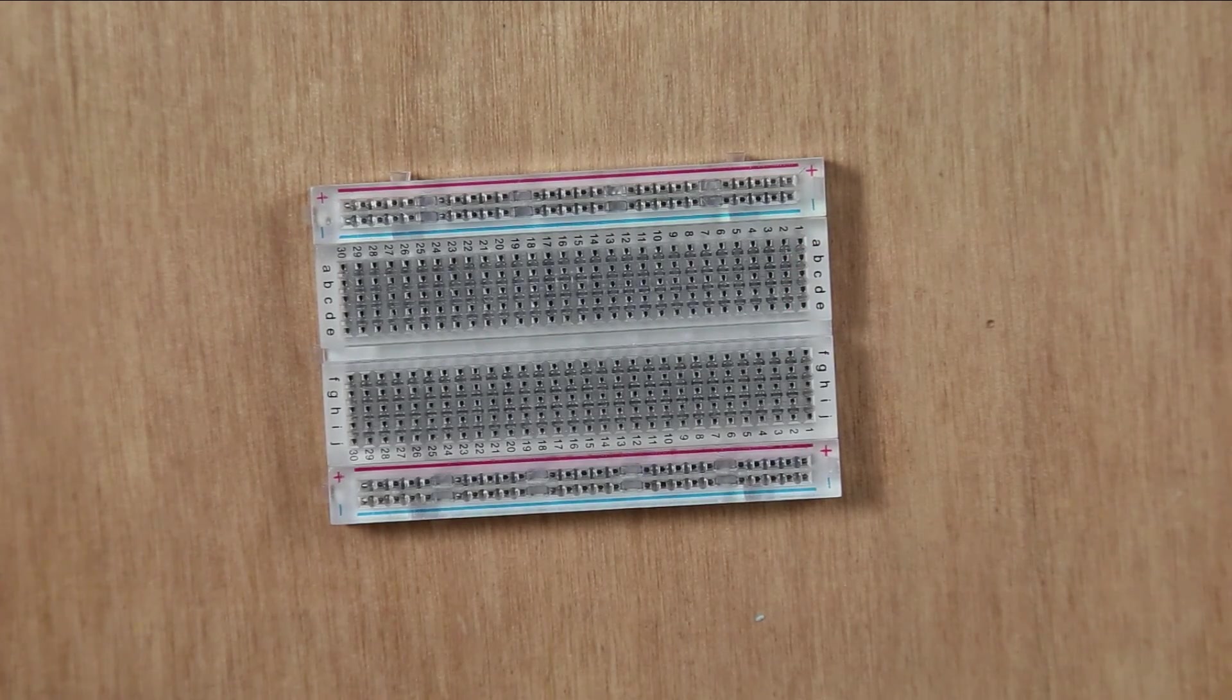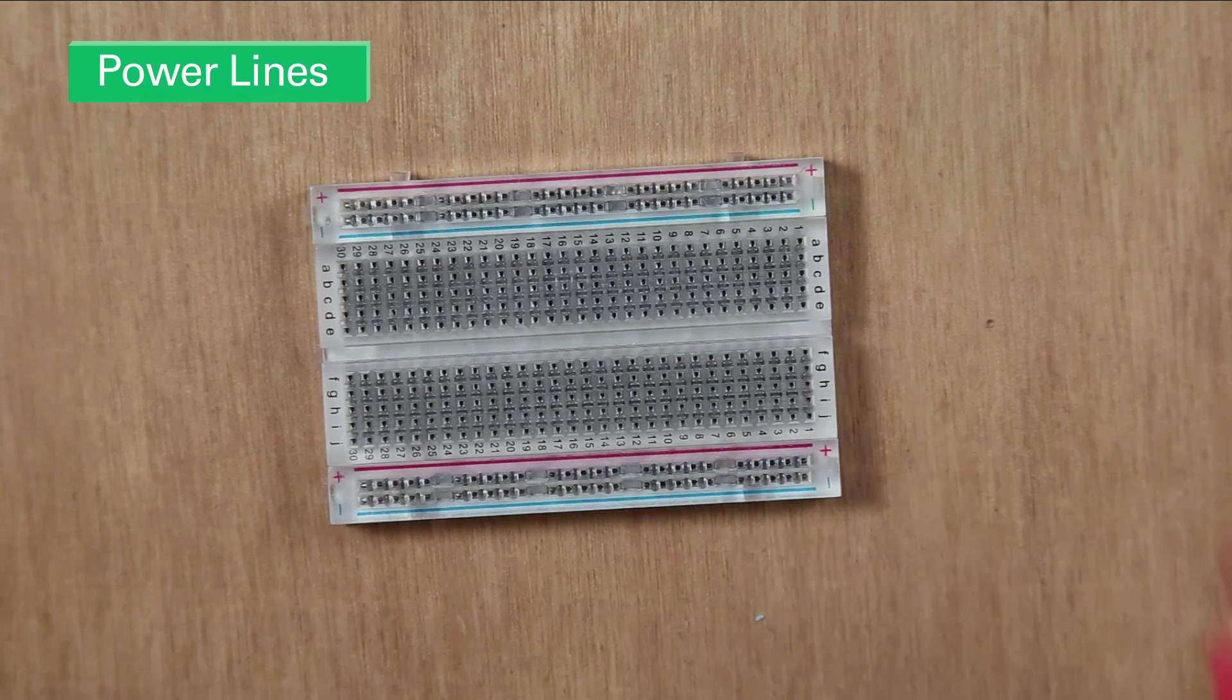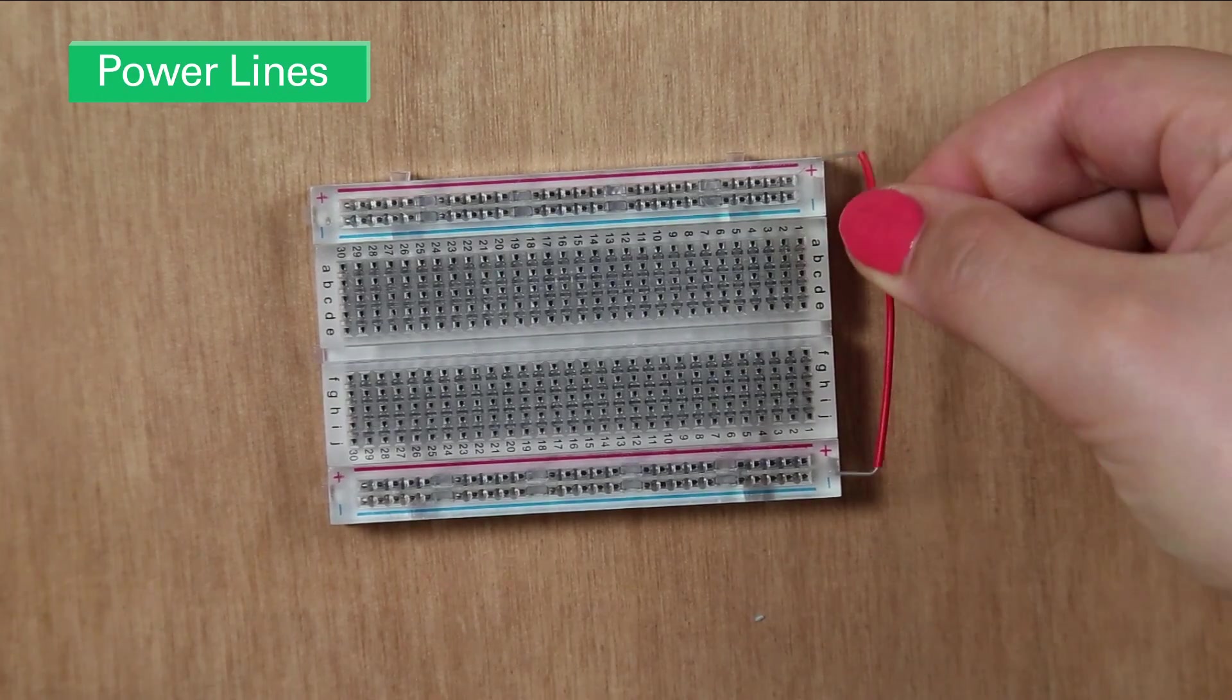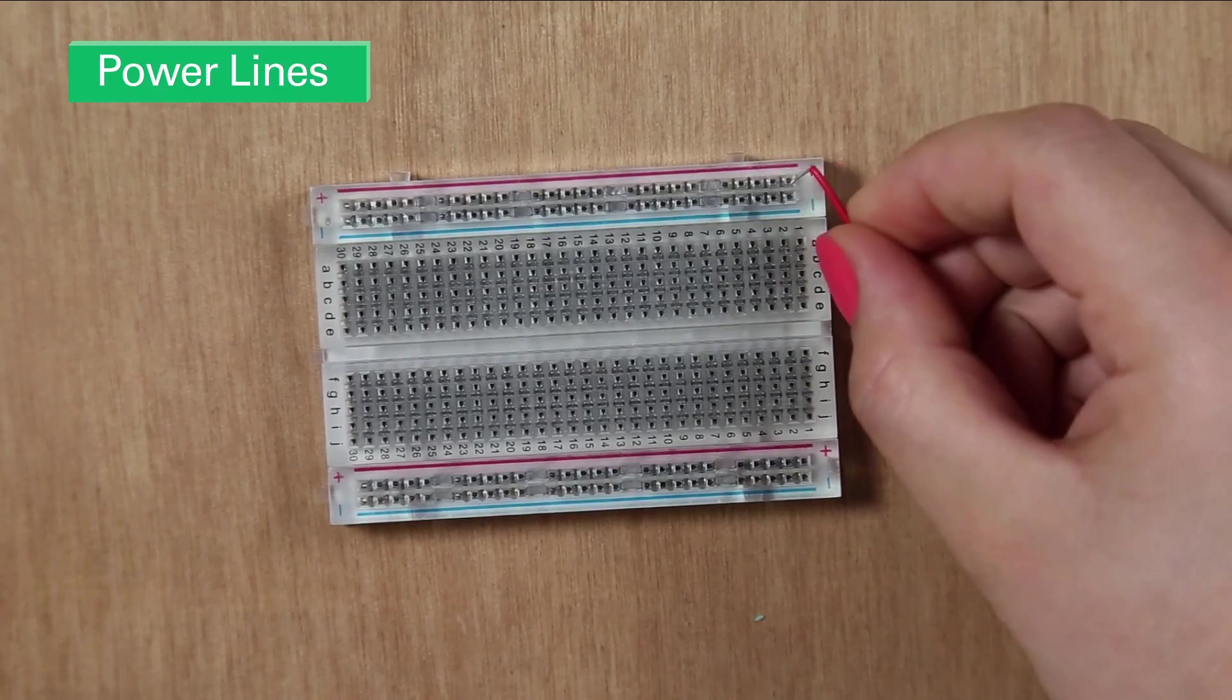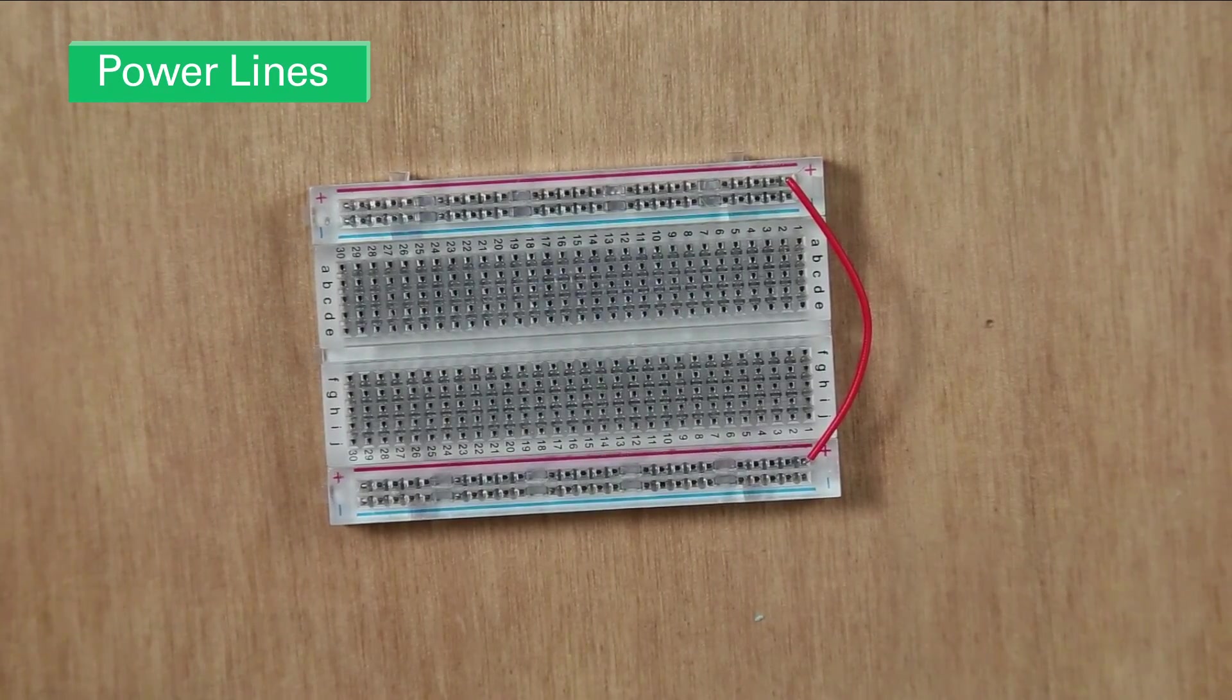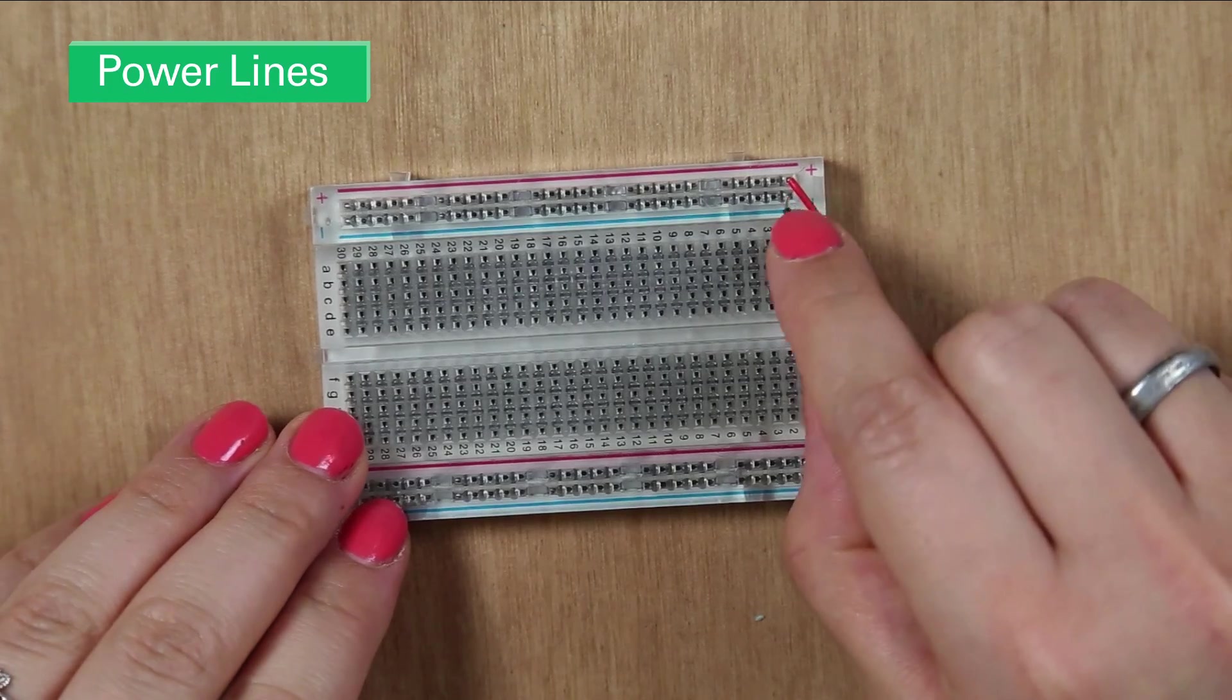So the first one we're going to start with is joining up our power lines. So we take our red wire, colored red like the positive on the board so we know it's positive. And then the same with the negative.